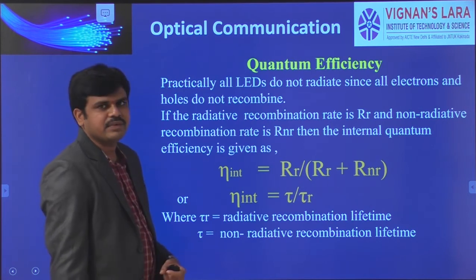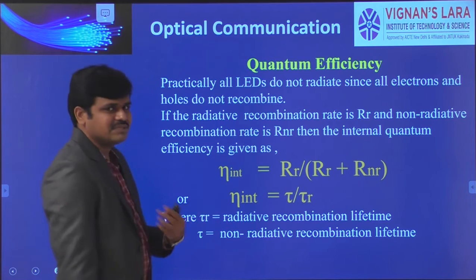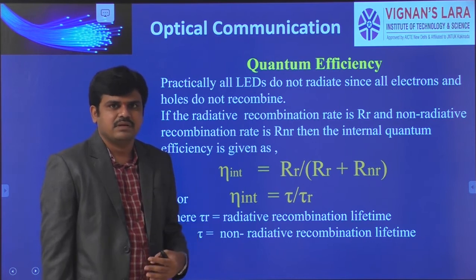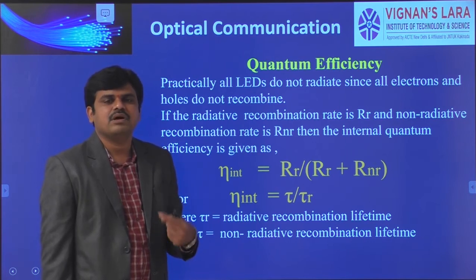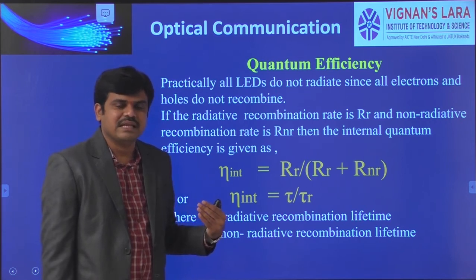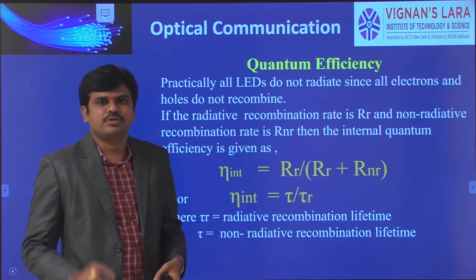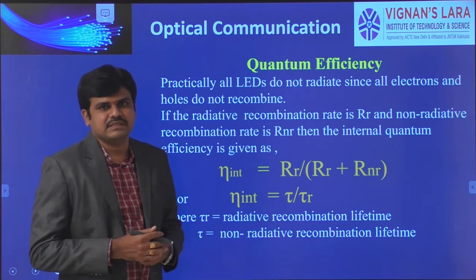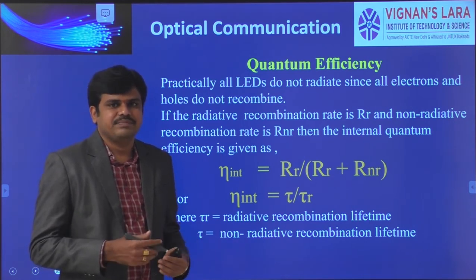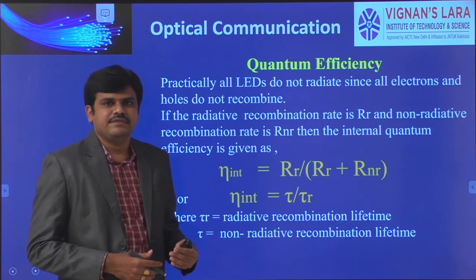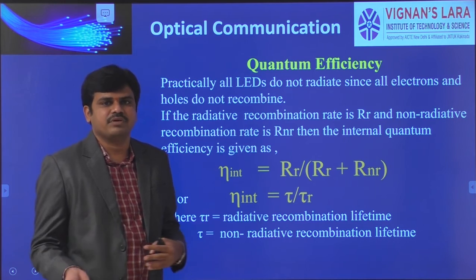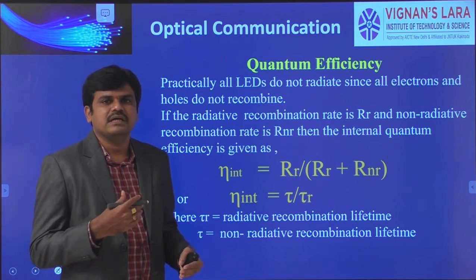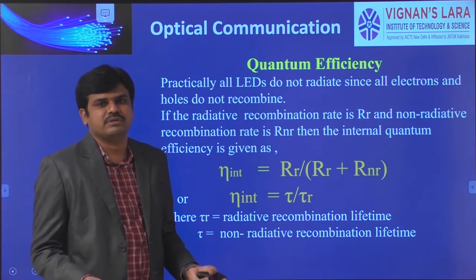Next, we go to quantum efficiency. Quantum efficiency means the number of carriers — that is, the number of electron-hole pairs — that recombine to produce a photon. For an LED or optical source, if the brightness or radiation should be more, the quantum efficiency should be more, meaning the number of electron-hole pair recombinations should be more.